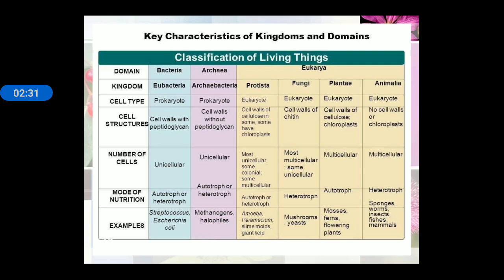Fungi have a eukaryotic cell type; cell wall made up of chitin; mostly multicellular; heterotrophic. Examples: mushroom and yeast. Plantae are eukaryotic; cell wall of cellulose; chloroplasts; multicellular; autotrophic. Examples: mosses, ferns, flowering plants. Animalia are eukaryotic; no cell wall; multicellular; heterotrophic. Examples: sponges, worms, insects, fishes, mammals, birds.